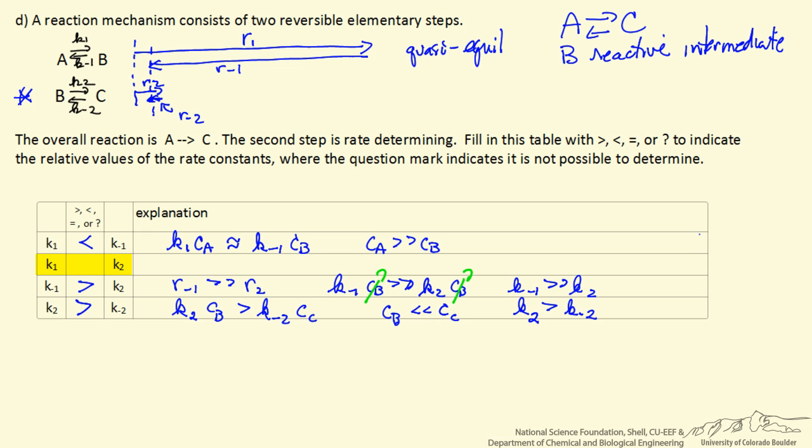So let's go back to the one about K1 and K2. Well K1 times the concentration of A is greater than K2 times the concentration of B. And all we're saying is R1 here is much larger than R2 here. We also know that CA is greater than CB because CB is a reactive intermediate. And so CA greater than CB and the rate greater means we can't really say anything about K1 relative to K2.